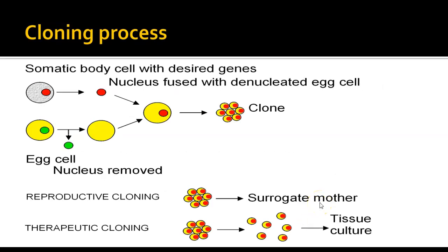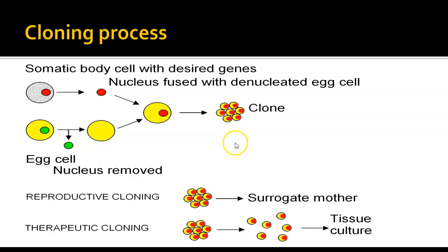Here's an outline of how we do somatic cell nuclear transfer. We take a body cell with our desired genes and remove the nucleus. We have an egg cell from which the nucleus is removed, then fuse those cells together and grow the result in culture to make a clone embryo. For reproductive purposes, we put that embryo into a surrogate mother and allow it to develop to birth. For therapeutic cloning — to make cells for gene therapy, for example — we grow that embryo in tissue culture and use those individual cells for whatever purpose they're designed for.